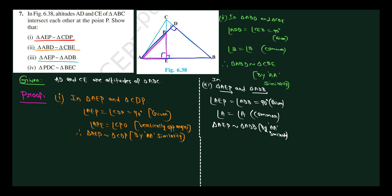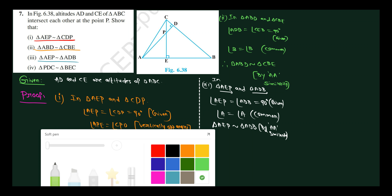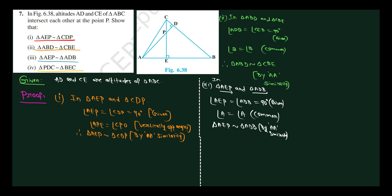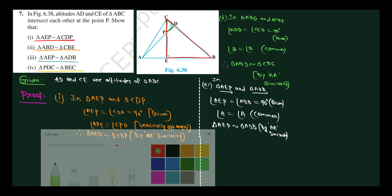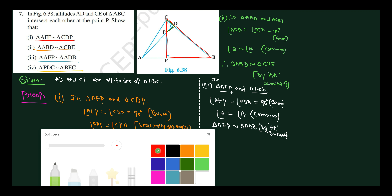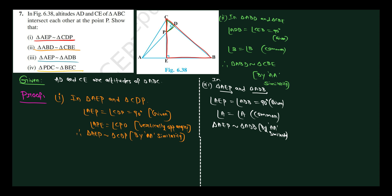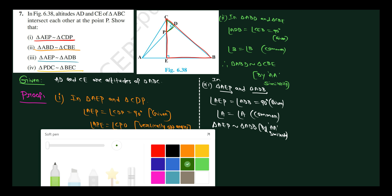Question number 4: In triangle PDC and triangle BEC, C is the common vertex for both triangles. Here we have angle D equals 90 degrees and angle E equals 90 degrees. And vertex C is common.